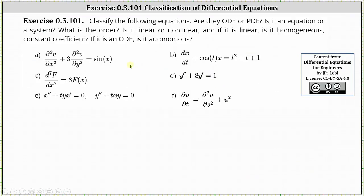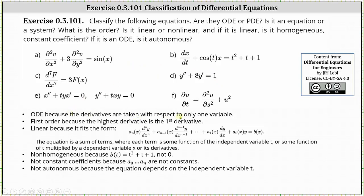Analyzing equation B: we have an ordinary differential equation because the derivatives are taken with respect to only one variable, t. We have a single equation, not a system. The equation has first order because the highest derivative is the first derivative. The equation is linear because it fits the standard linear form — the equation is the sum of terms where each term is some function of t, or some function of t multiplied by the dependent variable x or its derivatives. The equation is non-homogeneous because b of t equals t-squared plus t plus one, which is not zero.